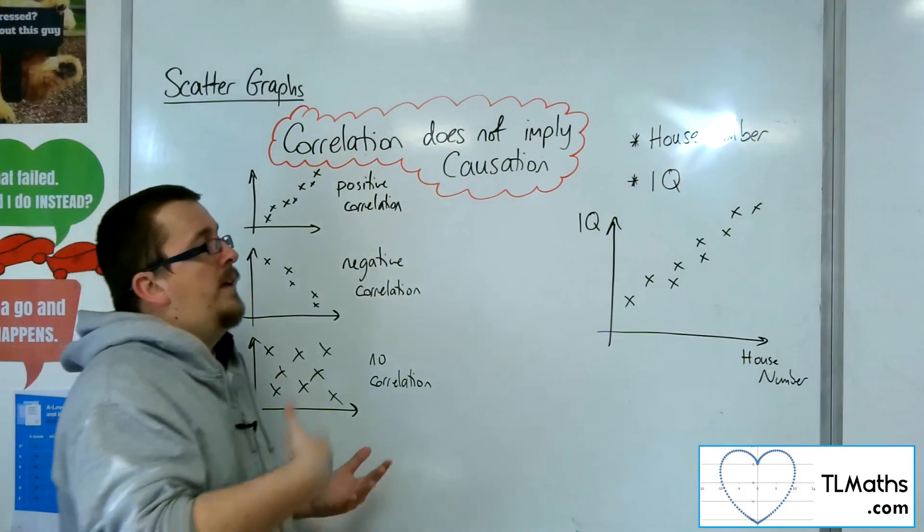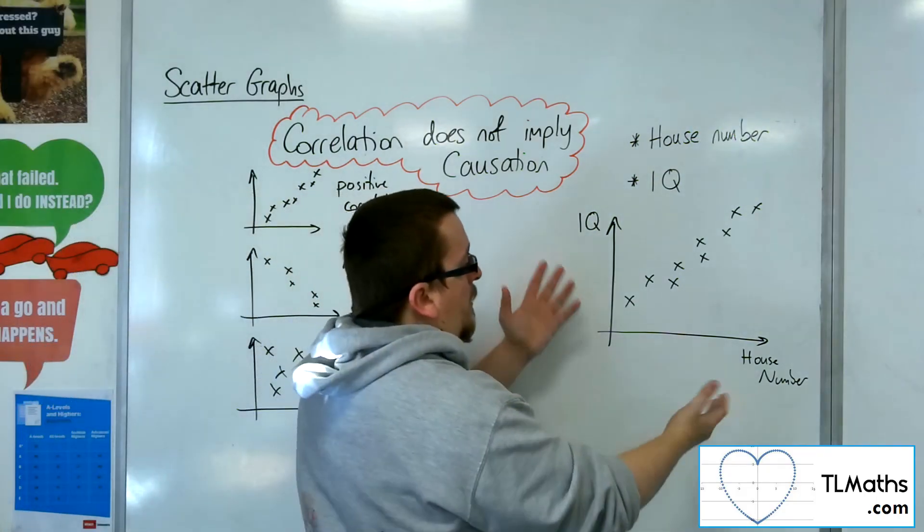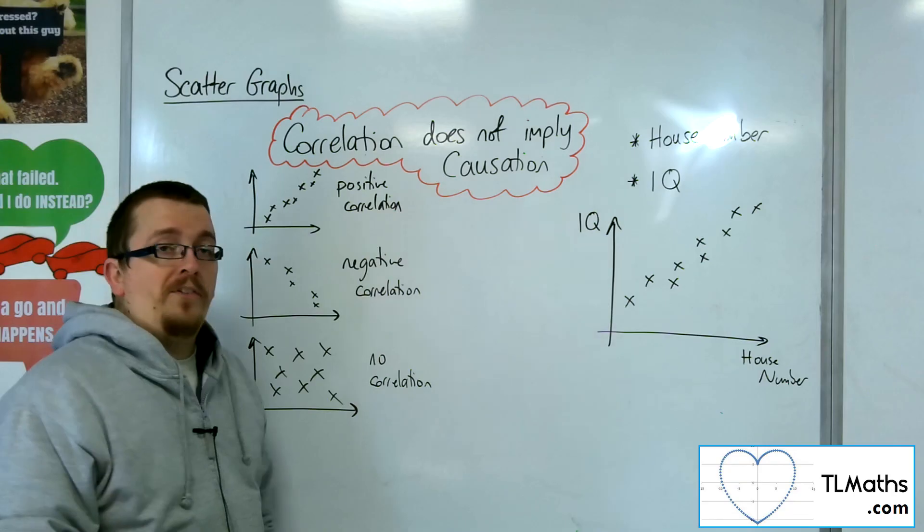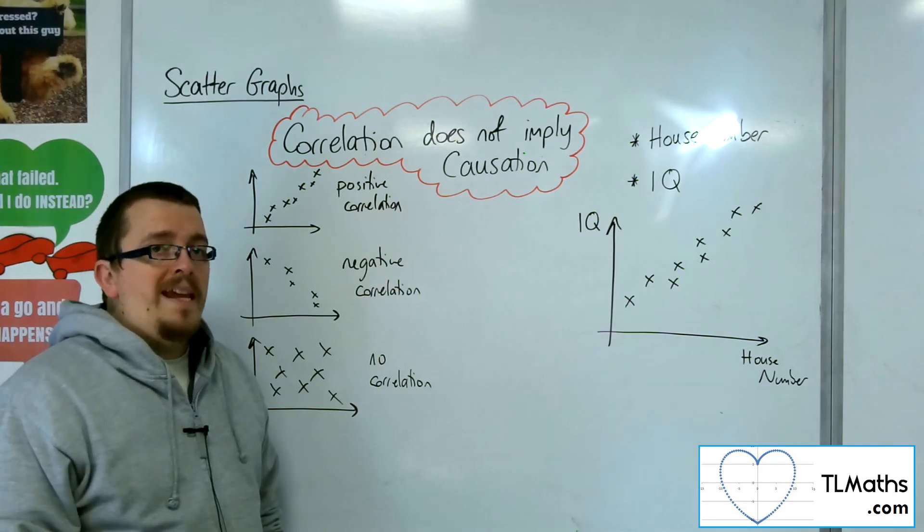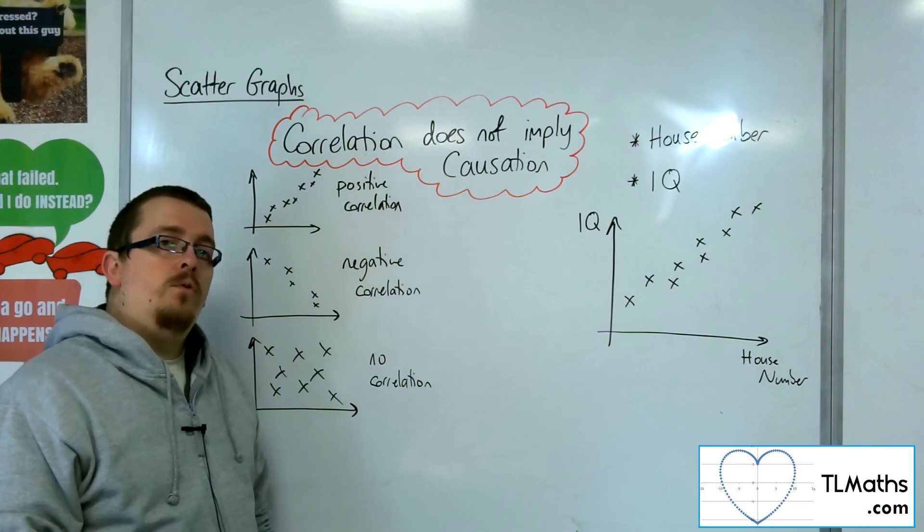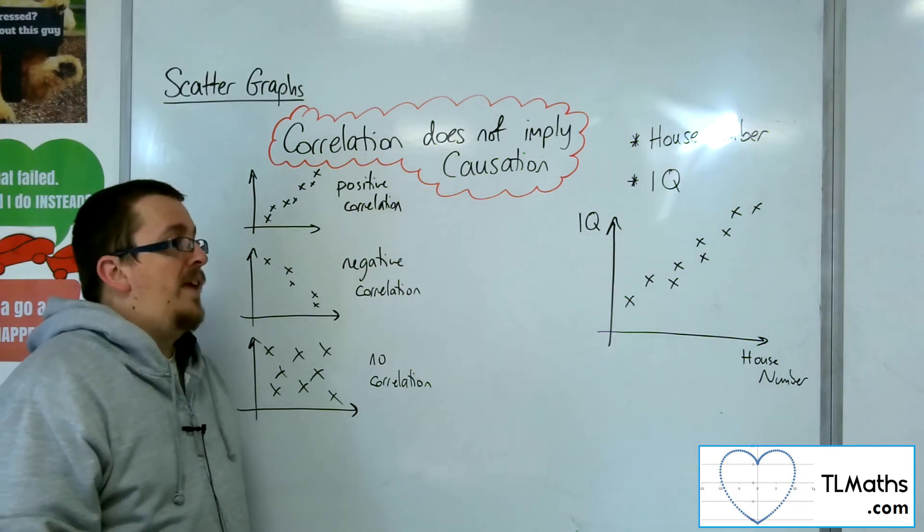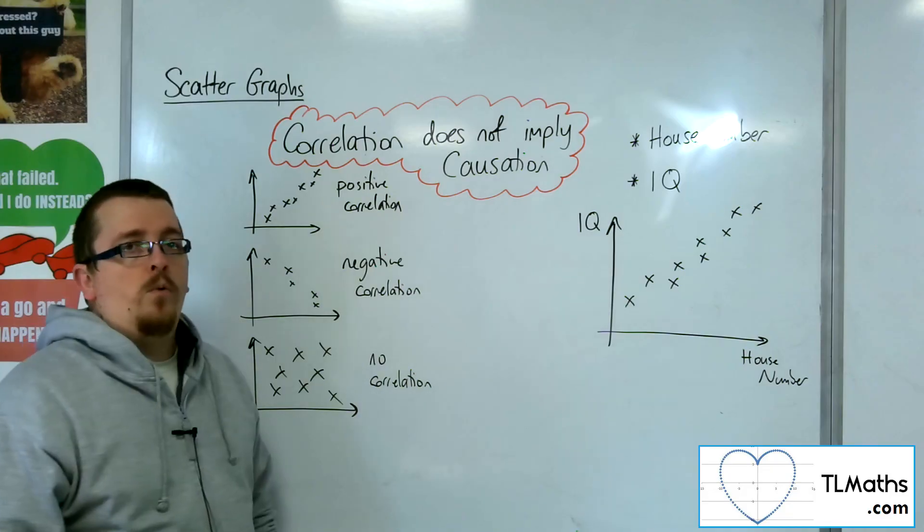However, if you just picked two random variables and found that you got exactly the same correlation, you need to be aware that you could discount it as well, as there may be no connection whatsoever.